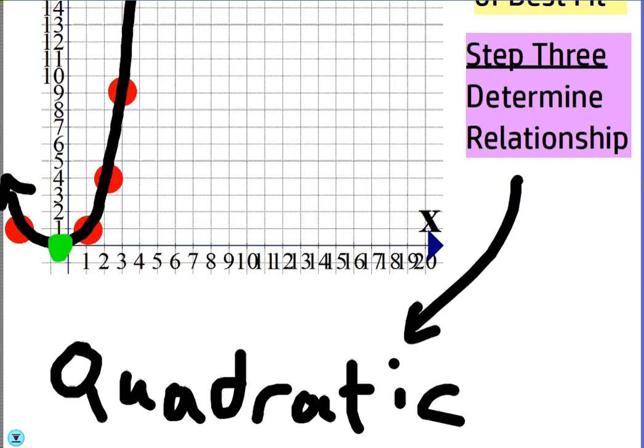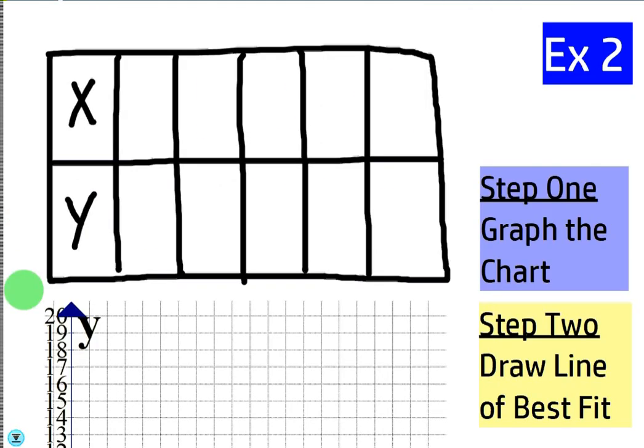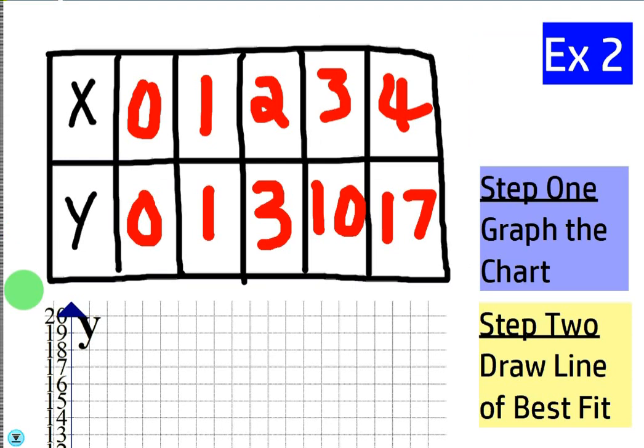All right, next example. Okay. Whoops. So we got 0,0, 1,1, 2,3, 3,10, and 4,17. Let's try to plot these real quick.